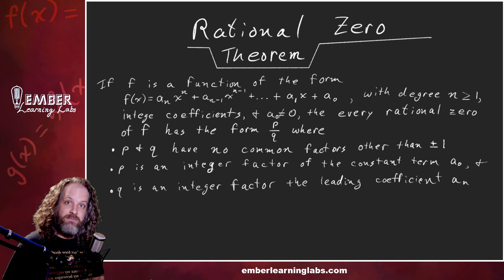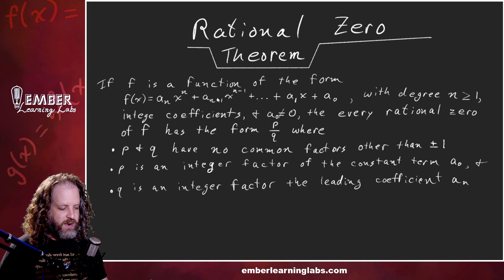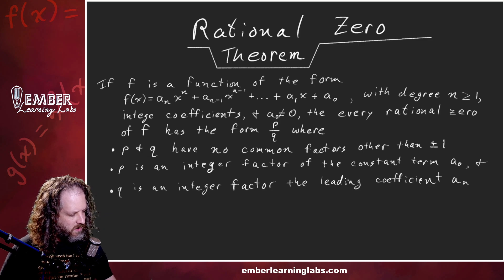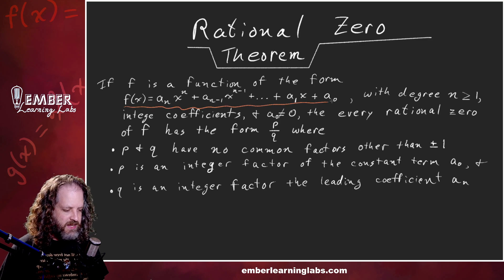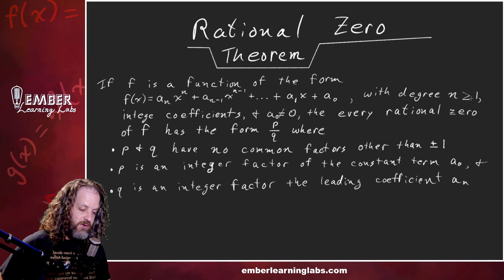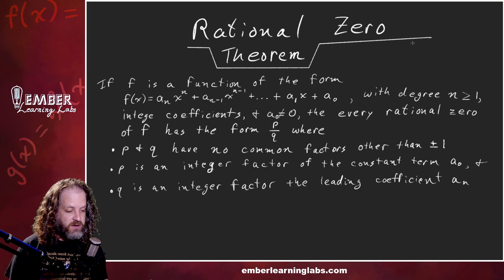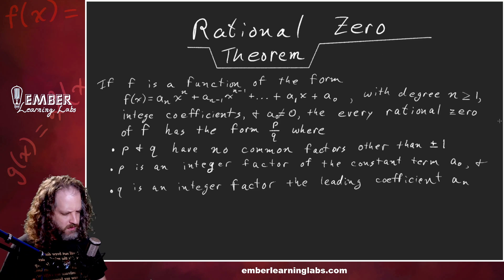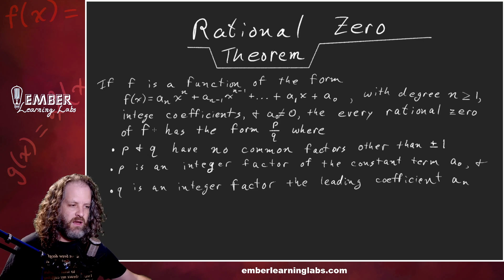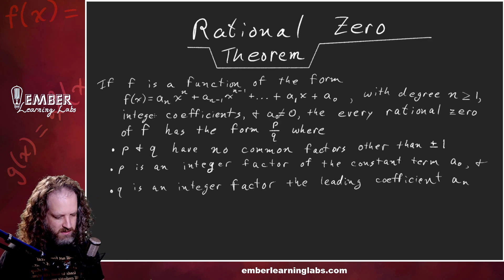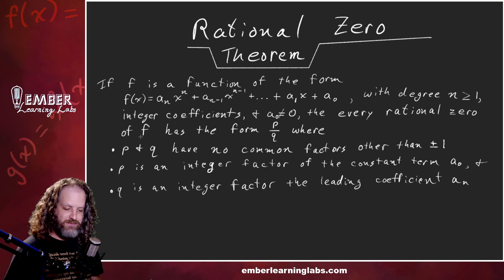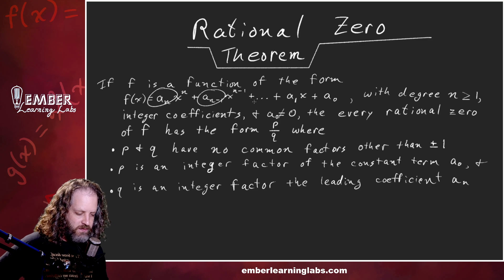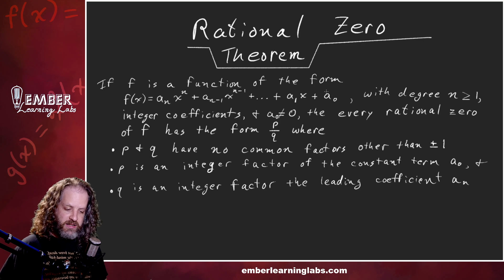Instead of just punching stuff into a calculator and hoping the technology works, the Rational Zeros Theorem tells us: if you have a polynomial function with degree n greater than one — so not a constant or linear function — with integer coefficients, meaning all the coefficients in front of the x terms are integers, no decimals or fractions.